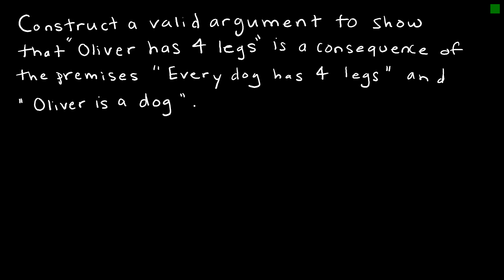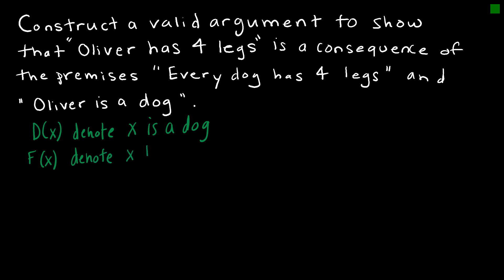Let's work together to construct a valid argument to show that if we know the premises 'every dog has four legs' and 'Oliver is a dog,' we can conclude that Oliver has four legs. The first thing we want to do is come up with some predicate statements. I'm going to let D(x) denote that x is a dog, and I'm going to let F(x) denote that x has four legs.